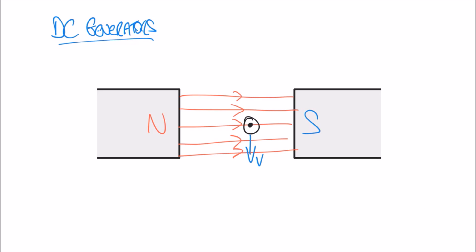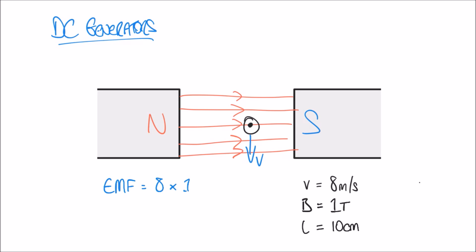Let's consider a quick example. We pass a conductor through a magnetic field with a velocity of 8 meters per second, the magnetic flux density B is 1 Tesla, and the length of the conductor is 10 centimeters. To work out the EMF we multiply the three terms together: 8 meters per second multiplied by 1 Tesla multiplied by 0.1 meters, giving an answer of 0.8 volts.